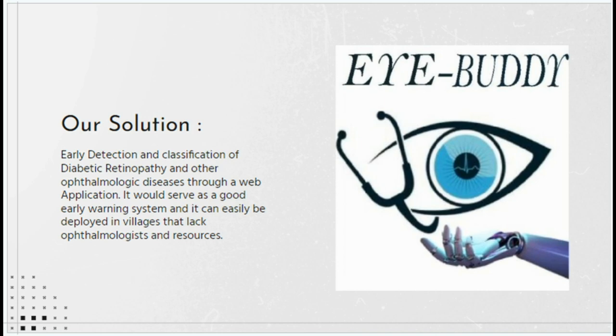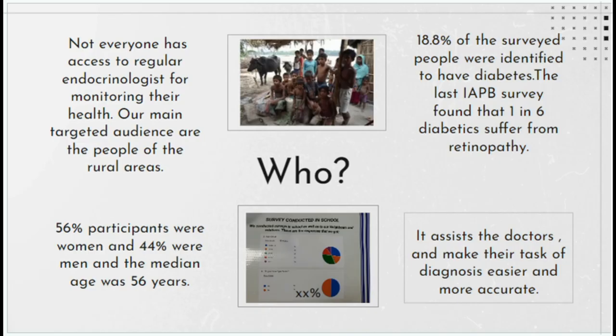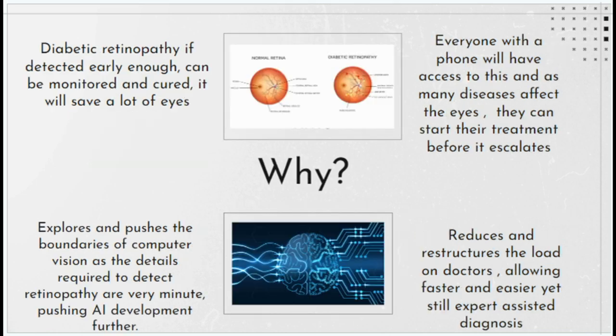Looking at the market statistics, our main focus is the rural population, where 18.8% of surveyed individuals have diabetes, and 1 in 6 diabetics suffer from retinopathy. Moreover, there is only one primary healthcare center for a population of 30,000. By providing early detection, we can save countless eyes and alleviate the burden on already-strained healthcare systems.